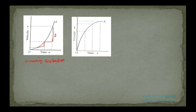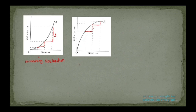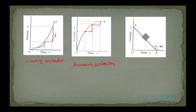The next graph is a side-opening parabola. Drawing slopes at different points on this graph, you can see the y-values keep on decreasing, so the slope decreases. A decreasing slope means a smaller change in velocity, which represents decreasing acceleration.